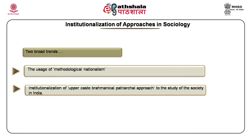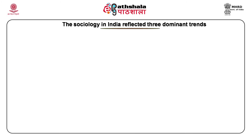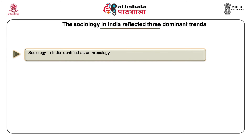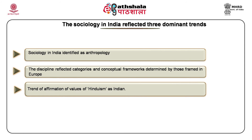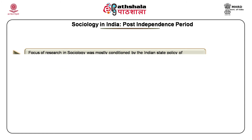As a result of such an approach institutionalized by G.S. Ghure, the father of Indian sociology, sociology in India reflected three dominant trends: one, sociology in India was identified as anthropology; two, the discipline reflected categories and conceptual frameworks determined by those framed in Europe; and three, a trend of affirmation of the values of Hinduism as Indian. As Upadhyay argues, this cultural nationalist perspective made the discipline of sociology not only empiricist and politically conservative but also Brahmanical and Savarna — that is, upper-caste — in its outlook.